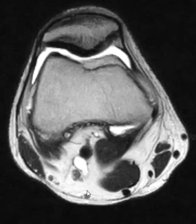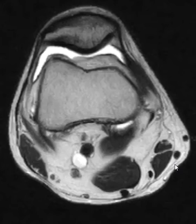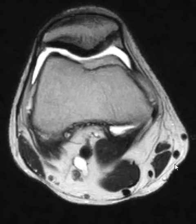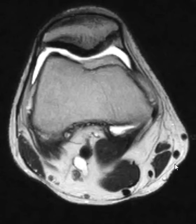Hello, this is Dr. Gay from First Lake MRI. This is a quick anatomic review of the PES-anserine tendon complex and also the semimembranosis, since it's so close to those. This is an axial T2 sequence above the knee joint.